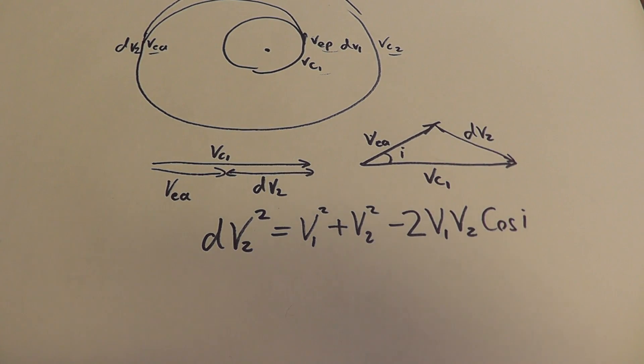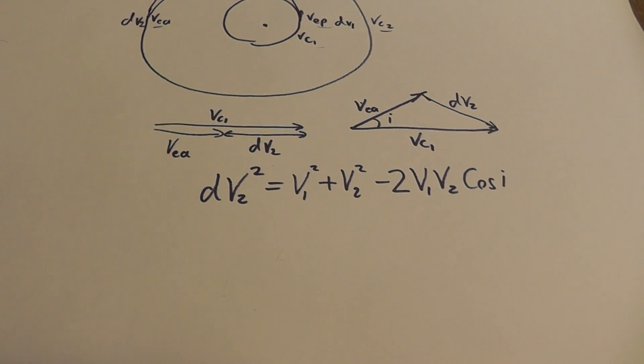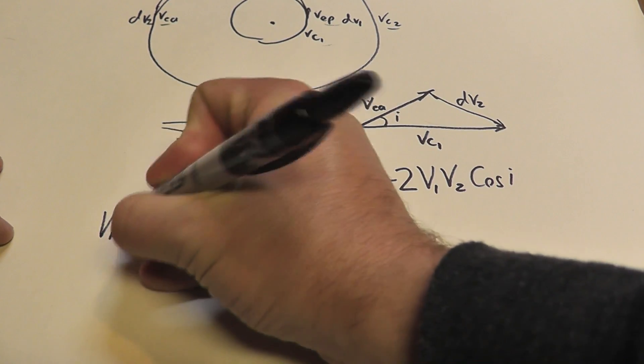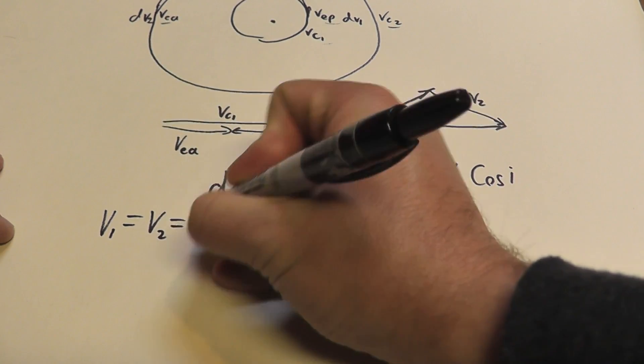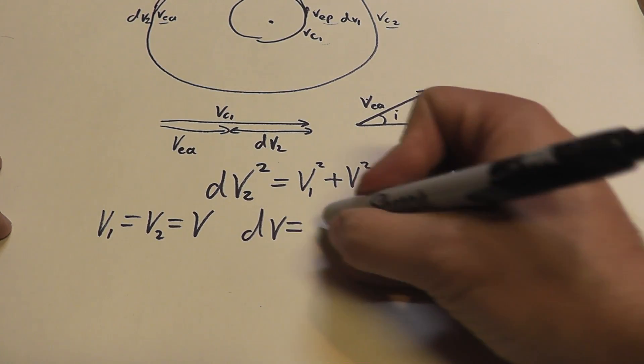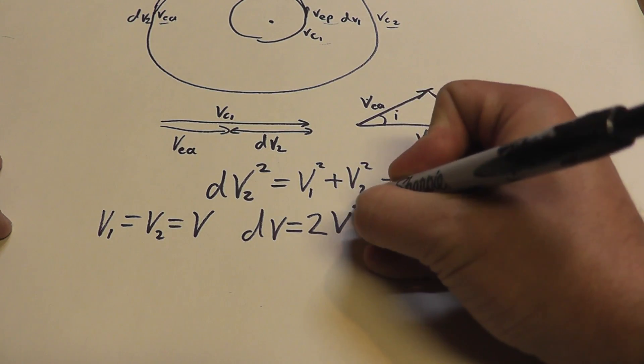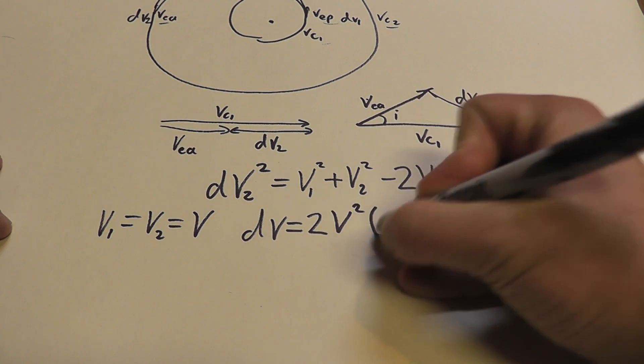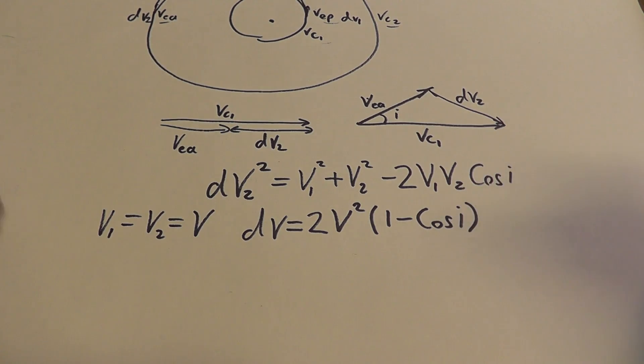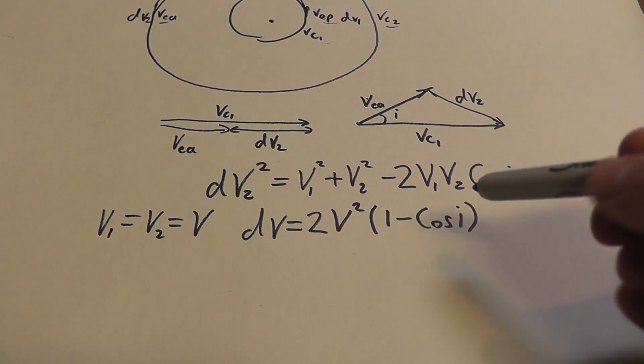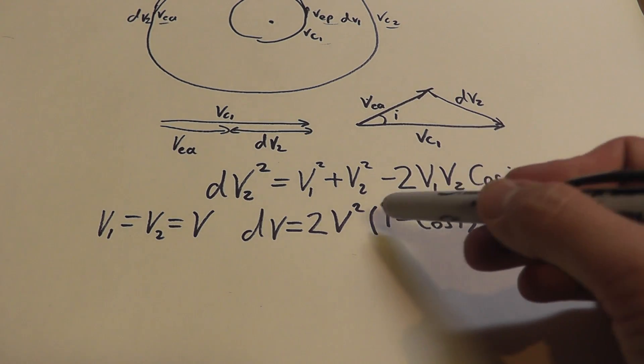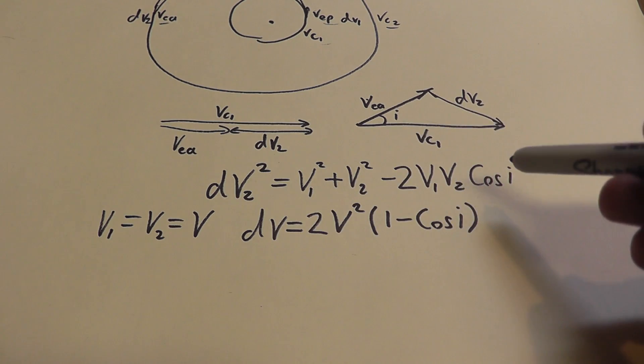Or, for example, maybe you're just performing an inclination change without any change in velocity. In that case, where v1 is equal to v2, which we'll just say is equal to v, then delta v becomes a much simpler one. It becomes 2v squared times 1 minus cosine i. And if i is equal to 0, then cosine of i is equal to 1. That means this is 0, and if you multiply the whole thing out, that means that delta v is 0.